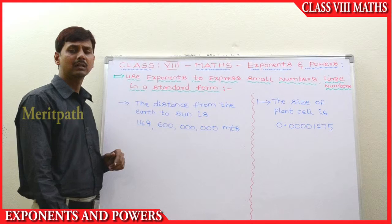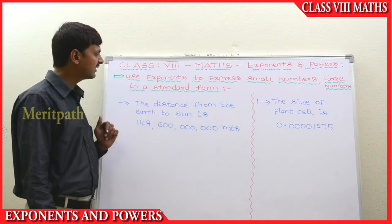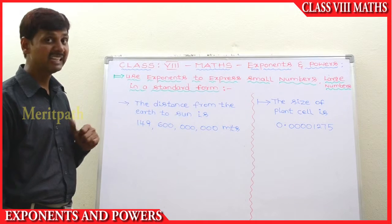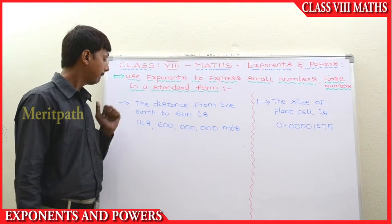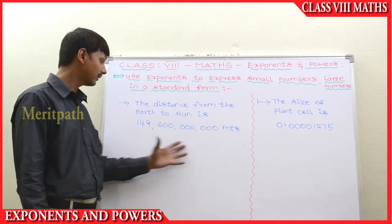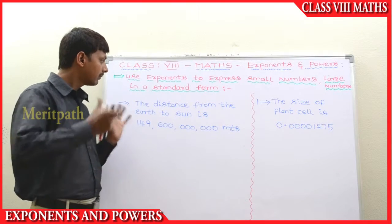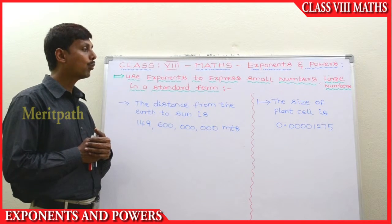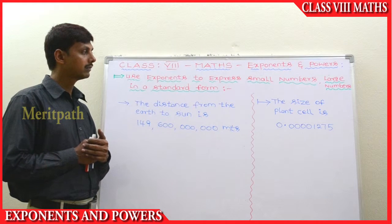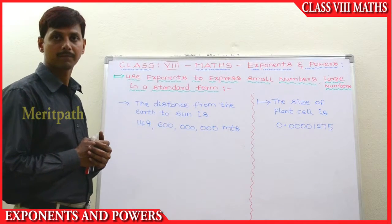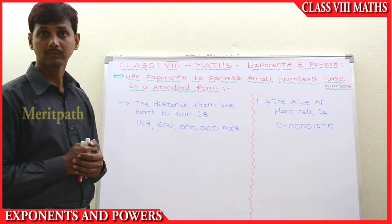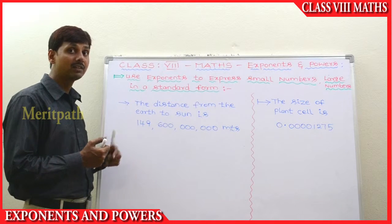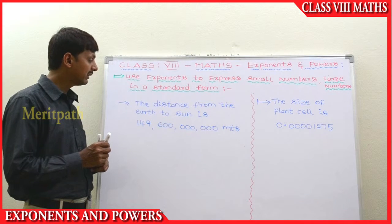The distance from the Earth to the Sun is 149,600,000,000 meters from the international system. The size of a plant cell is 0.00001275. We need to find out the standard form of these. Let's take the first example: we have the number 149,600,000,000.